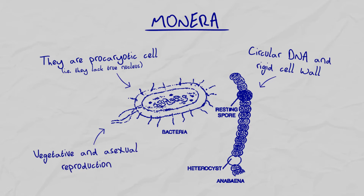Reproduction is by vegetative or asexual method, as they are not highly developed enough to go through sexual reproduction. They are also known as the decomposers of the environment, and decomposition helps to increase the fertility of the soil.